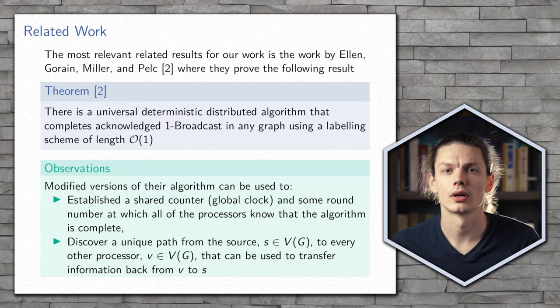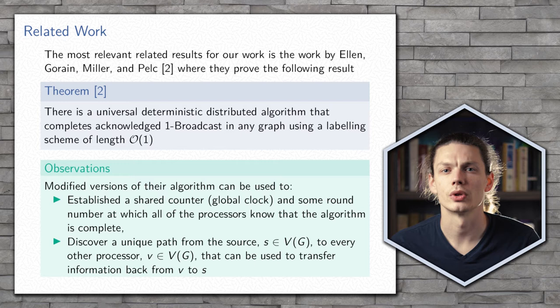In addition to this, it allows us to determine a unique path from the source to every other vertex that can be used to get messages back from that processor to the source. Having a path that can get messages back to the source is important for our results.